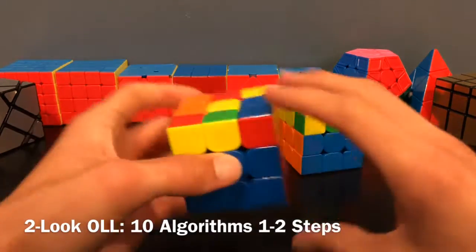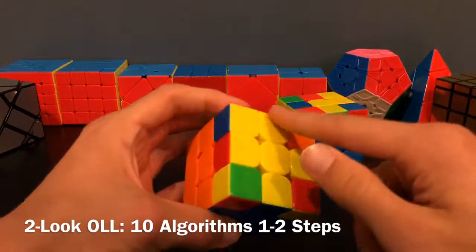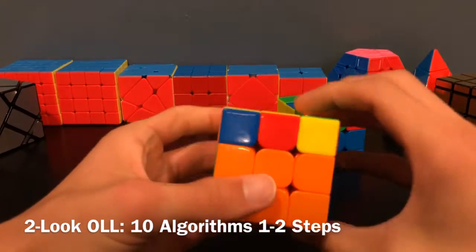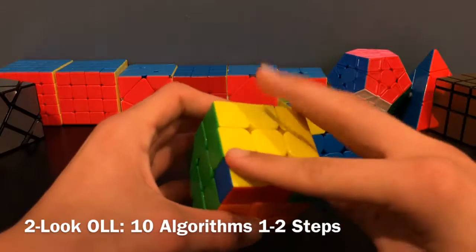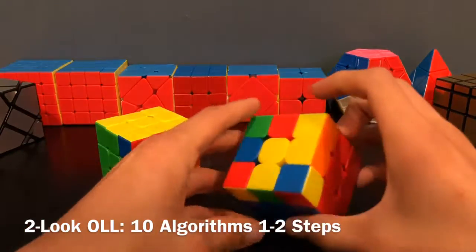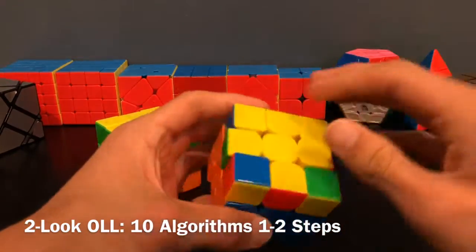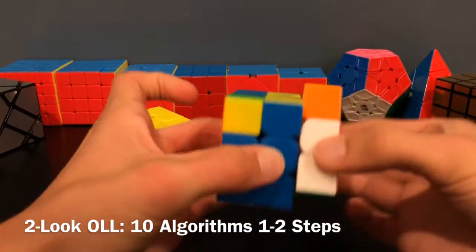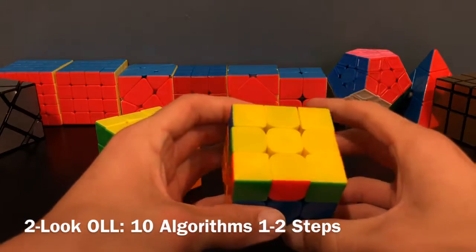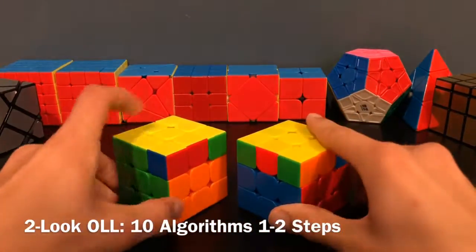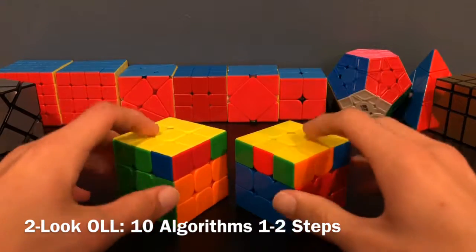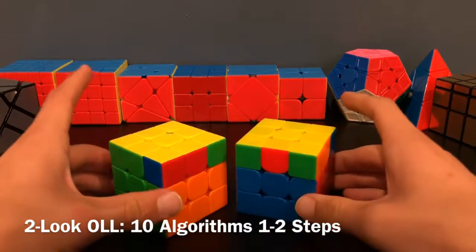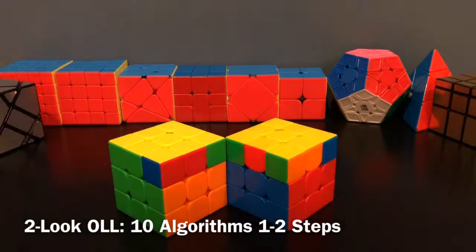So for this case, I would do this algorithm to then orient my edges, and then another algorithm to orient the corners. So for this, once again, orient edges in one step, orient corners in another. So this makes it so that in only two steps, you will always be able to orient the last layer. So it's pretty fast, but there's still one faster way.